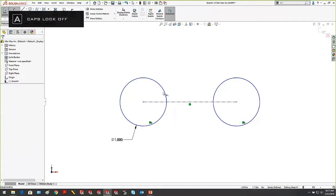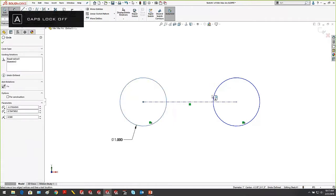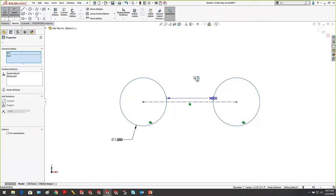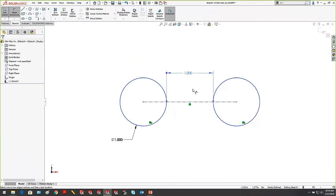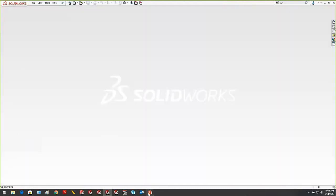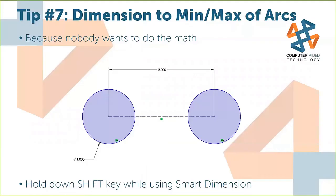If you've already added the dimension, you're never locked in. Select your dimension, go to the Leaders tab, and you can change your arc condition from center, min, or max on either circle. You can hold down Shift and go from min to min, so you can always go back and change those arc conditions.